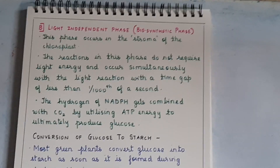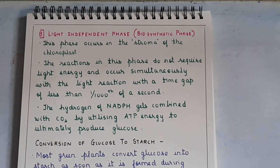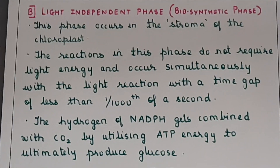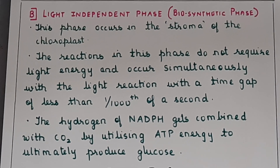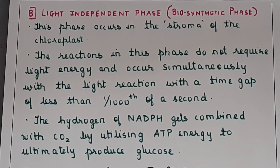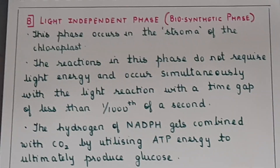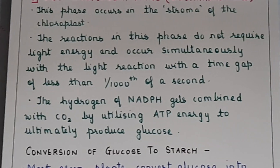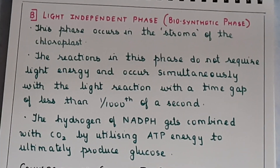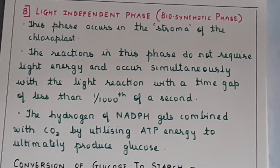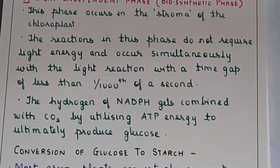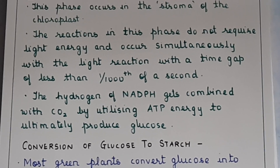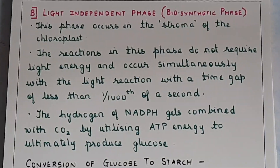The second phase is the light-independent phase, also called the biosynthetic phase. It does not require light, so it is called light-independent — it was earlier incorrectly called the dark phase, but this is wrong because it actually takes place almost simultaneously with the light reaction, with a time gap of less than 1/1000th of a second. The products of the light reaction — ATP, oxygen, and NADPH — are utilized here. Carbon dioxide plays its role in this phase, combining with NADPH and ATP to ultimately form glucose.